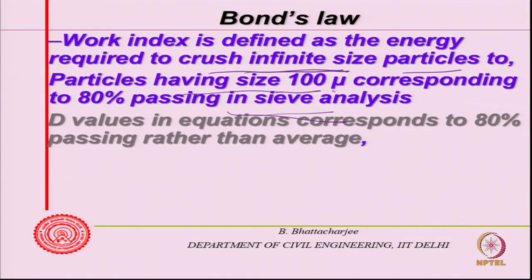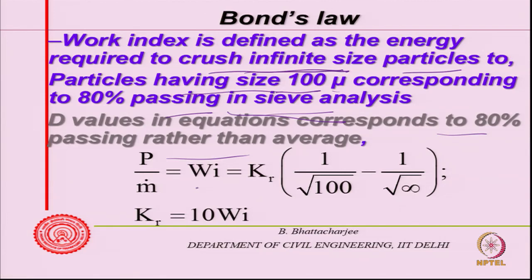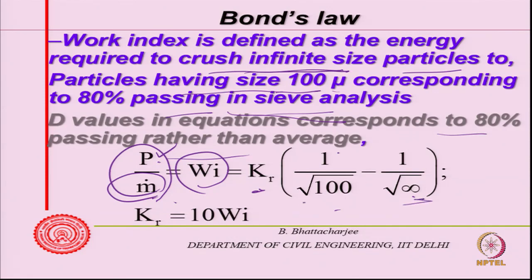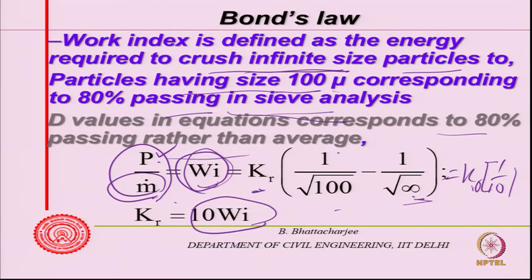Energy required to crush infinite size particles to particles having 80 percent passing through 100 microns. The D values in the equation correspond to 80 percent passing rather than average size. So writing P and F for the diameters at 80 percent passing, this gives W_y = K(1/√D_P - 1/√D_F). From this, K equals 10·W_i - so K is related to 10 times the work index and work index can be found out.